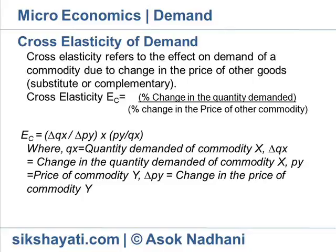Cross-elasticity of demand. Cross-elasticity refers to the effect on demand of a commodity due to change in the price of other goods, substitute or complementary. Cross-elasticity EC is equal to percentage change in the quantity demanded by percentage change in the price of other commodity. EC = (ΔQX / ΔPY) × (PY / QX).